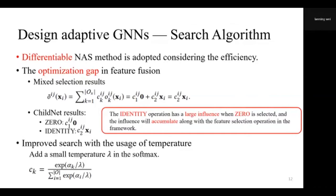Considering the search efficiency, we employ the differentiable search algorithm directly. However, we observe an optimization gap in the designed search space. For the selection operations, we have two operations — zero and identity — in the operation set. The mixed selection results can be calculated by a weighted summation of the two operation results. While in the child network, when the zero operation is selected, a zero tensor is expected. However, the identity operation has a large influence on the mixed results, and this influence accumulates along with the feature selection operations in the framework. To address this optimization gap, we add a temperature in the softmax. With a small temperature, the mixed selection results will be close to a zero tensor when the zero operation is selected, and the identity operation will have a small influence.